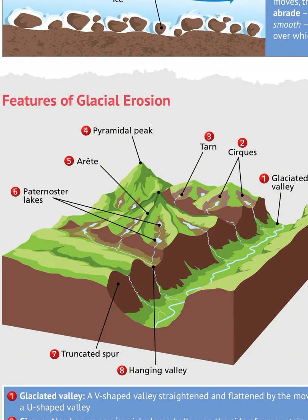Number seven is a truncated spur. You may remember learning about interlocking spurs in V-shaped river valleys. Truncated spurs used to be interlocking spurs but they have been eroded by the glacier during the last ice age. Finally, number eight is a hanging valley — a small tributary valley that hangs above the main one. After the glacial period, rivers can occupy these hanging valleys, with a waterfall spilling out over the side into the bigger U-shaped valley.